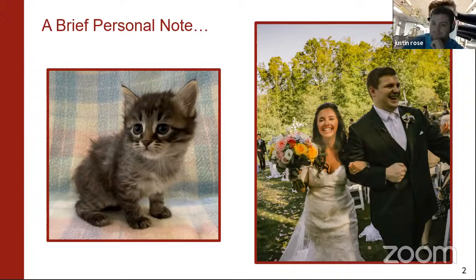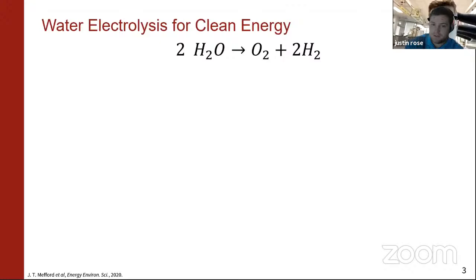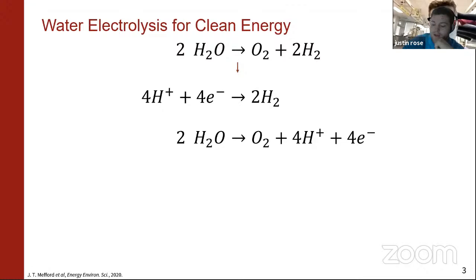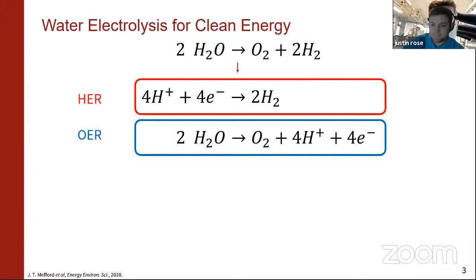Onto the science. The topic today is water electrolysis for clean energy. We can write out the reaction splitting water into O₂ and H₂ — taking a very cheap, common resource and turning it into a very clean fuel, hydrogen. Via electrolysis, this splits into two half-reactions: the hydrogen evolution reaction and the oxygen evolution reaction. Per hydrogen molecule, HER requires two electron transfers; per oxygen molecule, OER requires four. As a result, hydrogen production is limited by the sluggish kinetics of the oxygen evolution reaction.